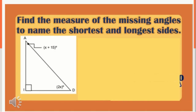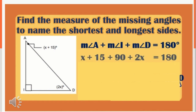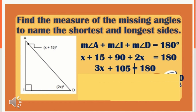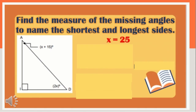Let's find the measure of the missing angles to name the shortest and longest side. Given that angle A measures x plus 15, angle B is 2x, and angle I is 90 degrees because it is a right angle. Remember that the sum of the measures of interior angles of a triangle is 180 degrees. So the equation is: angle A plus angle I plus angle B equals 180 degrees. Substituting: x plus 15 plus 90 plus 2x equals 180.